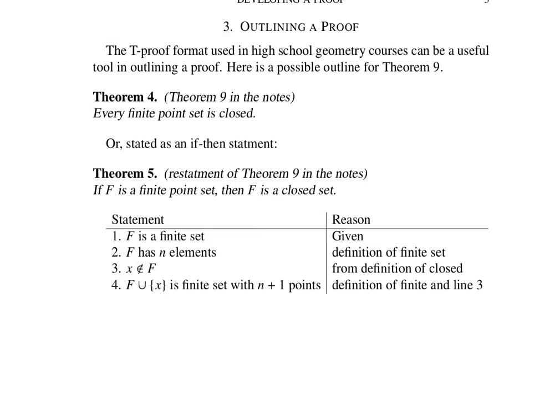Now this next step is not the first thing that I tried when I first examined this particular theorem. But after working through a couple of other proofs, I recognized that F together with this point that was not in F—if I took the union of those, then that's still a finite set.